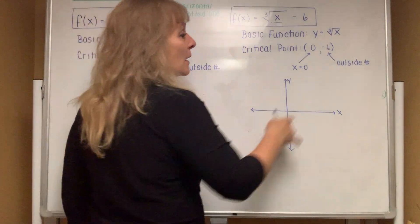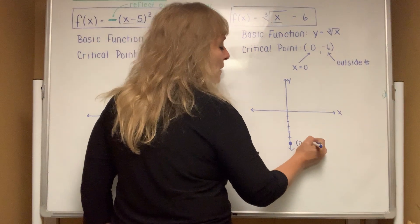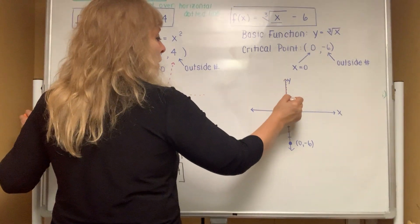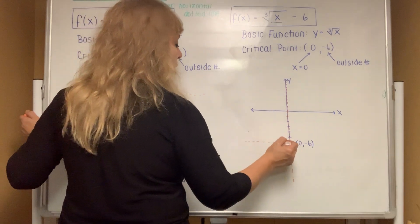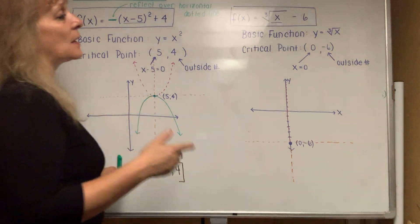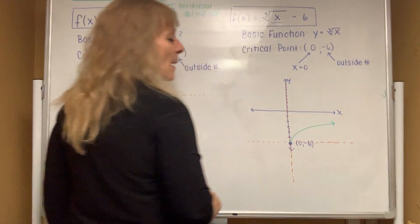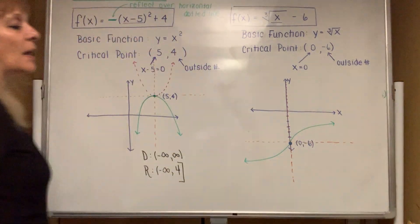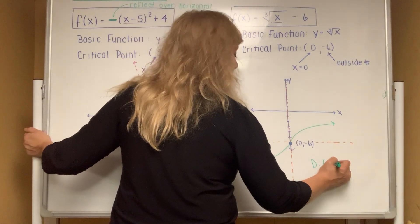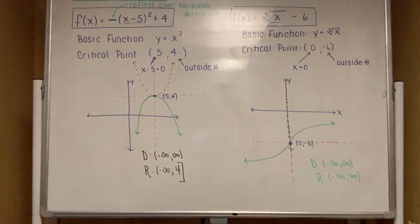If you mess up placing the point, just check: the y value is negative 6, so that's where (0, -6) is. Put a dotted line through the critical point vertically and a dotted line through it horizontally. There's no negative sign in front, so just draw the sideways snake — start at the critical point and draw each half. The domain and range for all snakes are always negative infinity to positive infinity, so you just have to write it down.